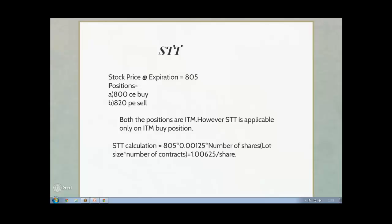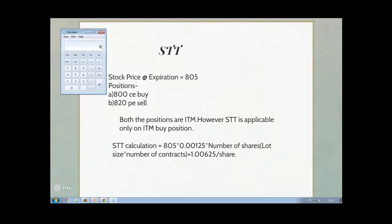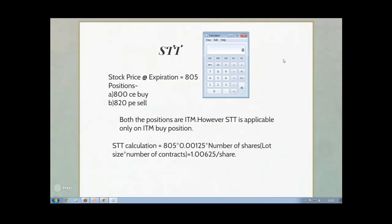By number of shares I mean the total lots that you have taken multiplied by the number of contracts. So let's say you have a Reliance 800 call buy position, Reliance expires at 805, and you have bought 10 lots of 250 shares. Your STT will be: 805 × 0.000125 × 10 lots × 250 shares = ₹2,515 rupees. This is how you calculate your Security Transaction Tax.